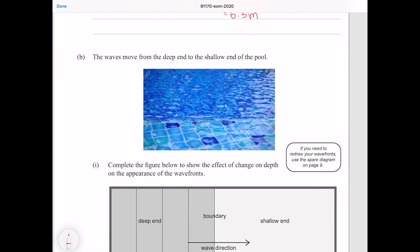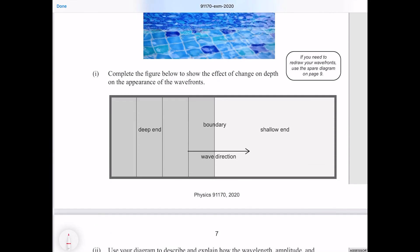The waves move from the deep end to the shallow end of the pool. Complete the figure below to show the effect of change on depth on the appearance of the wave fronts. So let's think about what happens when our waves move from the deep to the shallow end. Well throughout the refraction process, which this is, this is still refraction, our frequency stays the same.